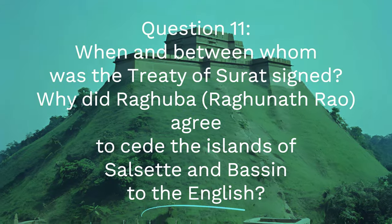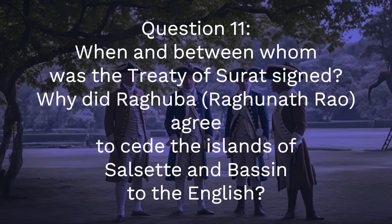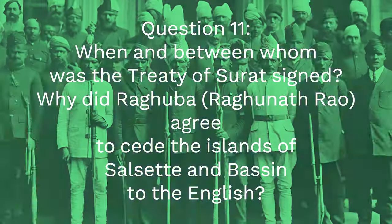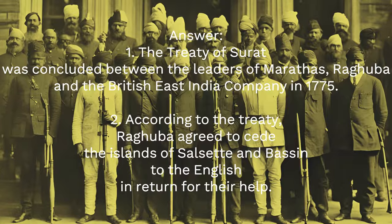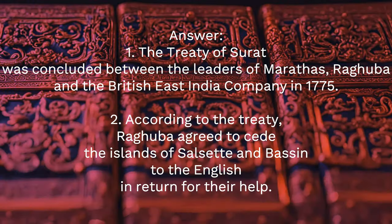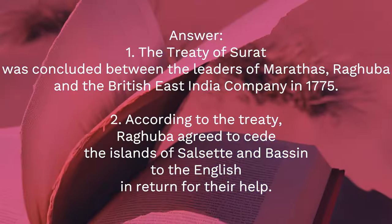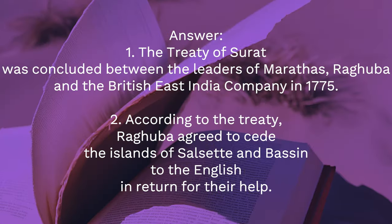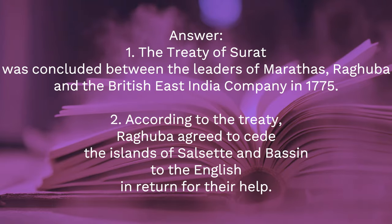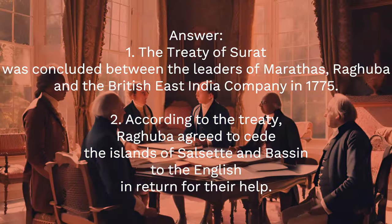Question 11: When and between whom was the Treaty of Surat signed? Why did Raghunath Rao agree to cede the islands of Salsette and Bassein to the English? Answer: One, the Treaty of Surat was concluded between the Maratha leader Raghunath Rao and the British East India Company in 1775. Two, according to the treaty, Raghunath Rao agreed to cede the islands of Salsette and Bassein to the English in return for their help.